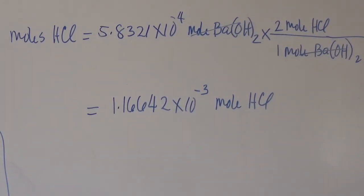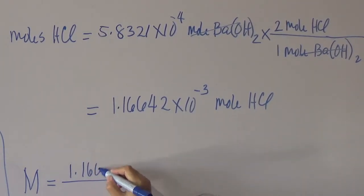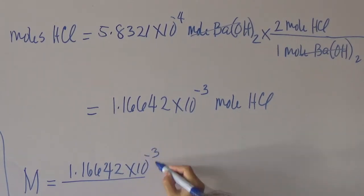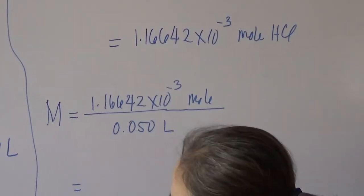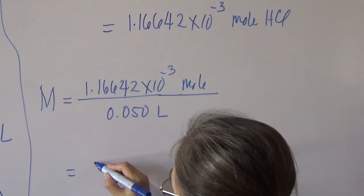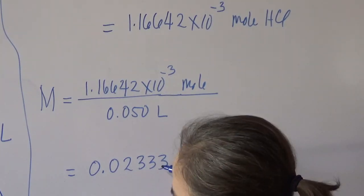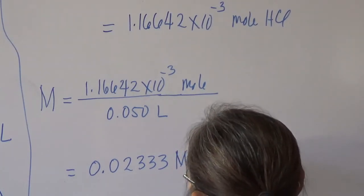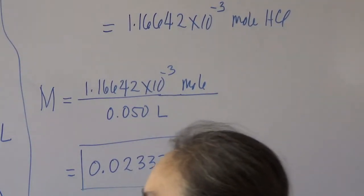Now we have the moles of hydrochloric acid and the volume, which is 50 ml or 0.05 liters. Dividing: 1.16642 × 10⁻³ moles divided by 0.05 liters gives a concentration of 0.02333 molar hydrochloric acid. This is the concentration of our analyte, hydrochloric acid.